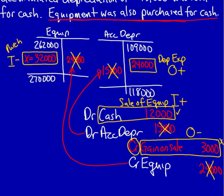Those are the four items that will show up on your cash flow statement. We're going to do one more example, and hopefully by then you'll totally understand how to do the T-account proof.